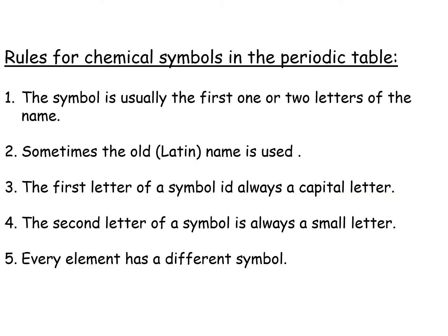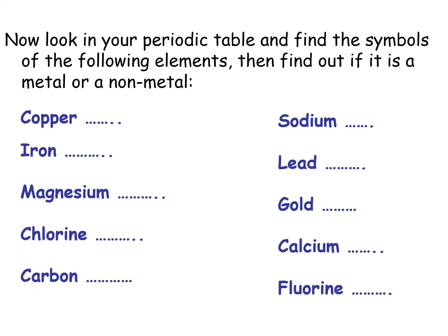Next: rules for chemical symbols in the periodic table. The symbol is usually the first one or two letters of the name. Sometimes the old name is written in Latin. The first letter of a symbol is always capital. The second letter of the symbol is always small. Every element has a different symbol. Now look in your periodic table and find the symbols of the following elements, then find out if it is metal or non-metal.